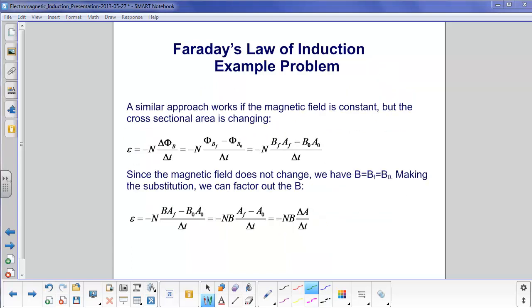Let's take the case where the magnetic field stays the same, but the cross-sectional area of the loop is changing. Start again with Faraday's law. And the definition of delta phi B, which is just flux final minus flux initial, substitute again BF times A, B zero times A zero.